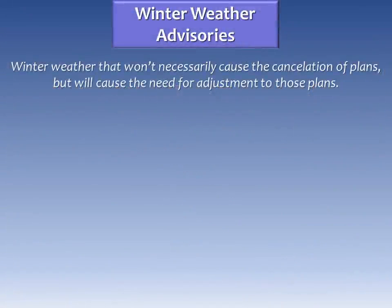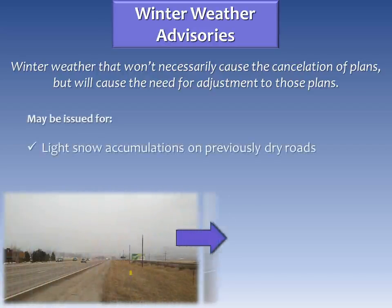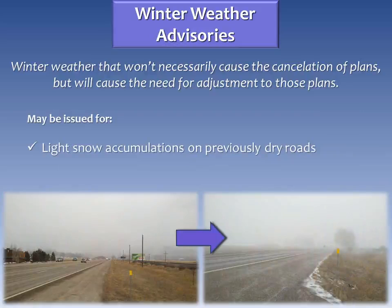Let's begin with our winter weather advisories. When we are considering issuing this product, we are concerned with winter weather that will be bad enough that it won't necessarily cause cancellation of plans, but will cause the need for adjustment to those plans. The most obvious type of weather will be light snow accumulations that occur on previously dry road surfaces. The first picture on the left plainly shows a dry road surface, unaffected by snow. In the second picture on the right, it shows the very same stretch of road just 5 minutes after the previous photo was taken. You'll notice that the visibility lowered dramatically, and the road surface is beginning to become slick from light snow cover. This type of quick change is what we consider for a winter weather advisory.